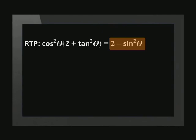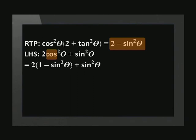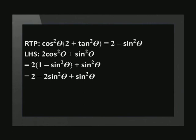Now that we have simplified the expression, we need to see where we are heading to prove that the left-hand side is the same as the right-hand side. We always need to keep the destination in mind so that we can use the correct identities. Our right-hand side is 2 minus sin squared theta. This tells us we need to get rid of the cos on the left-hand side, leaving only sin theta. Using the squares identity to change cos squared theta to 1 minus sin squared theta, and distributing the 2, we get 2 minus 2 sin squared theta plus sin squared theta. This simplifies to 2 minus sin squared theta, which gives us the right-hand side.